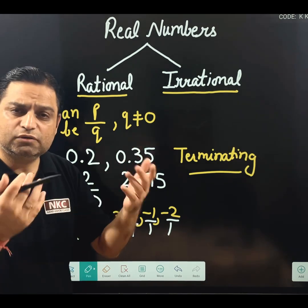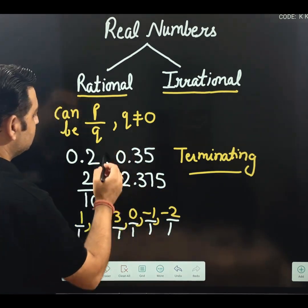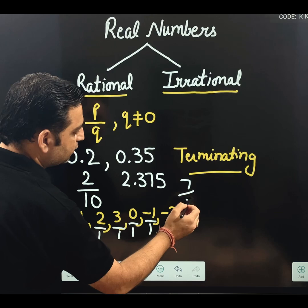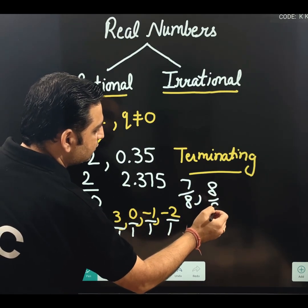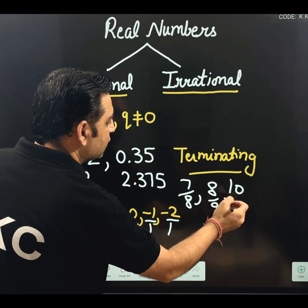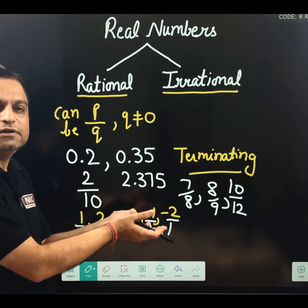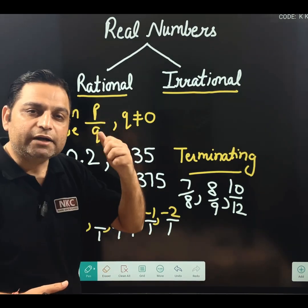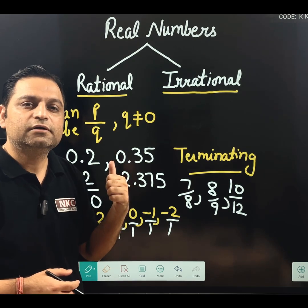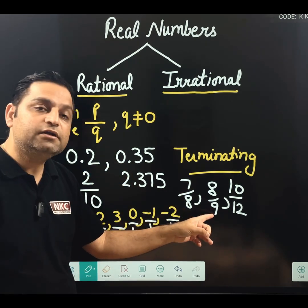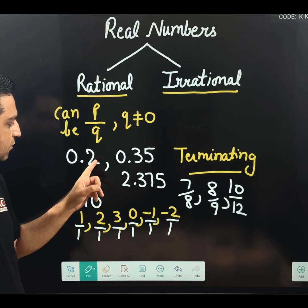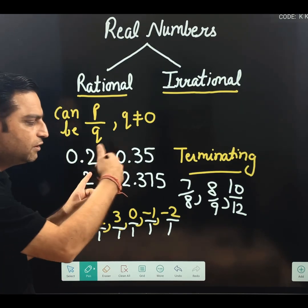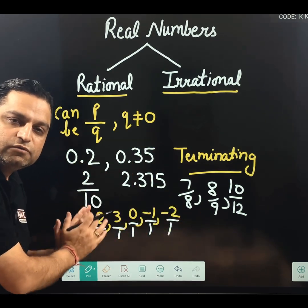Other than these which are actually in fraction. For example, let us suppose 7 over 8, 8 over 9, 10 over 12. They are obviously rational because they are already written in P upon Q. But my aim for explaining was, it is not necessary that it is written in this form. All those forms which can be written as P upon Q, they are also rational.